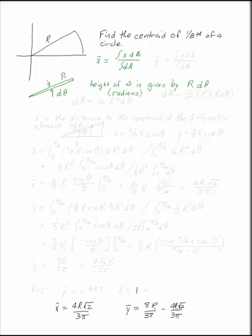So if the height of my triangle is given by rdθ, then I can say that the area of my triangle, dA, is going to be one-half times the base r times the height of my triangle, rdθ. dA is one-half r squared dθ.